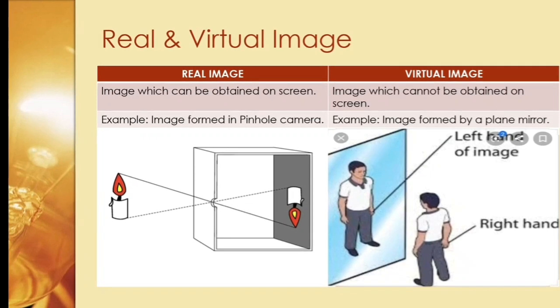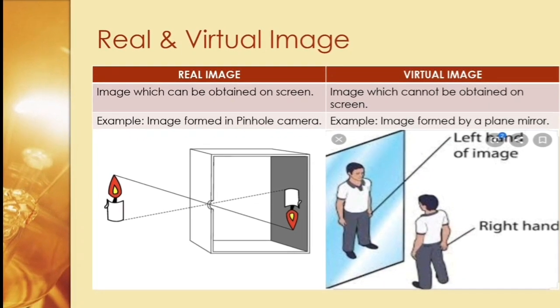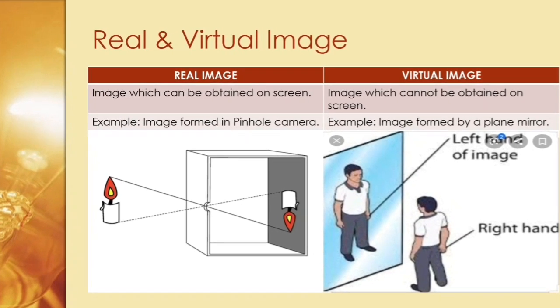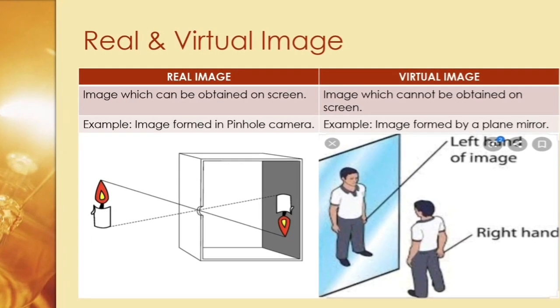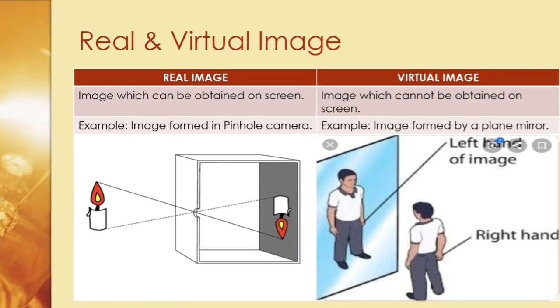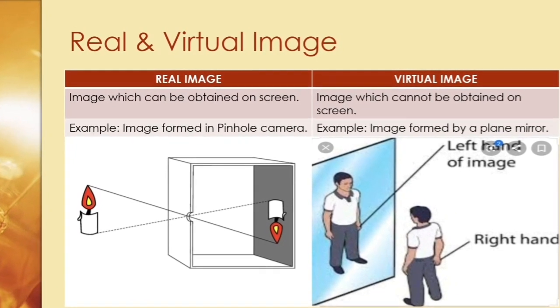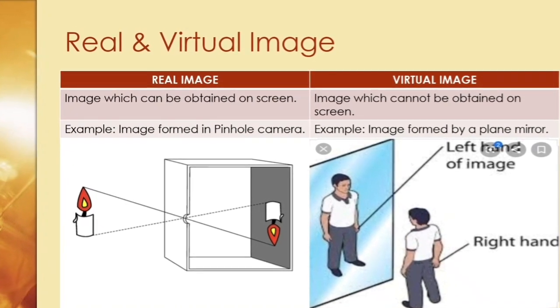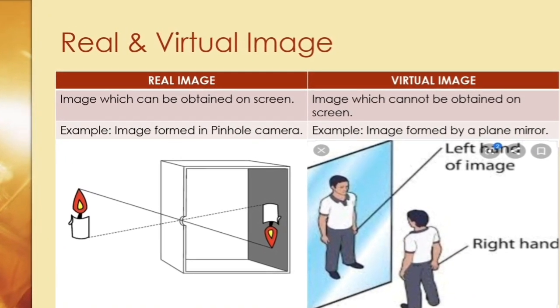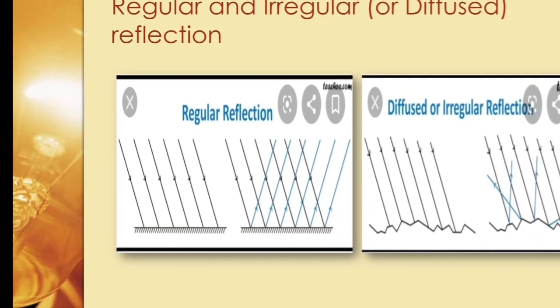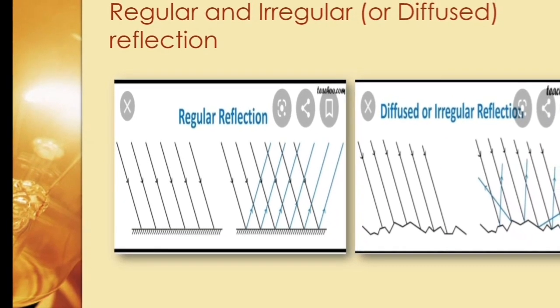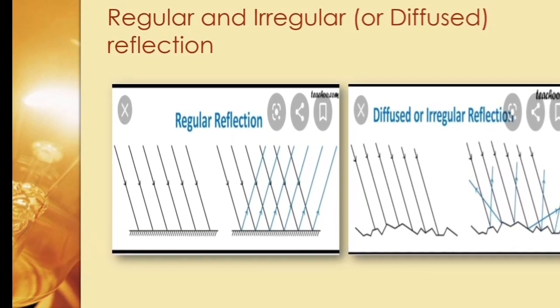In class 6, you have studied about pinhole camera. We get a real image on a pinhole camera, whereas a virtual image we get on a plane mirror. There are two types of reflection, which you can see in the diagram, and we will study them in detail.